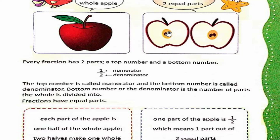So one part by total parts. Ab one part kya hai — one, aur total parts kitne hain — two. So humara fraction kya banta hai? One by two.